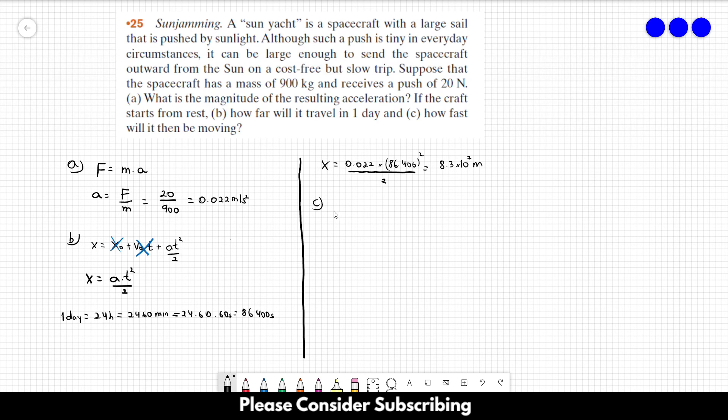Letter C, how fast will it be moving. So let's remember that if the acceleration is constant, we can say that V is equal to V0 plus AT. So the initial velocity is zero, so this goes away. So V is equal to the acceleration.